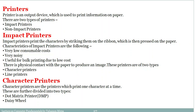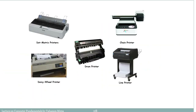Impact printers are useful for bulk printing due to their low cost, and there is a physical contact from paper to produce an image. These printers are further of two types: character printers and line printers. Character printers, as the name suggests, print one character at a time. They are further divided into two categories: dot matrix printers and daisy wheel printers.